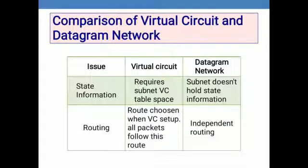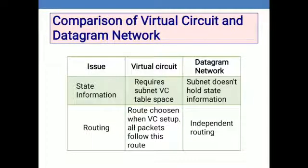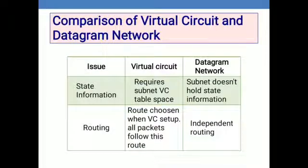In datagram networks, routing is independent — not dependent on any pre-arranged routers. When a packet arrives at a router, that router decides in which direction the packet will move. There is no pre-setup in datagram networks; it works like a connectionless service. Virtual circuits use connection-oriented services, meaning pre-establishment of connection is required. Connectionless means no pre-arrangement is needed.